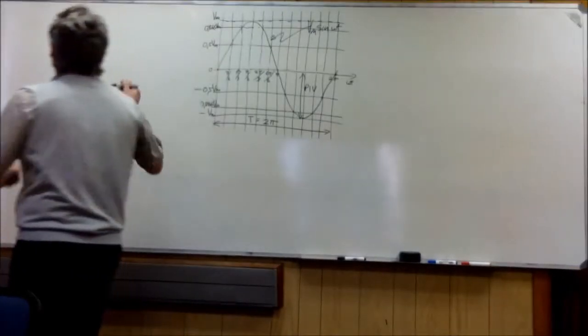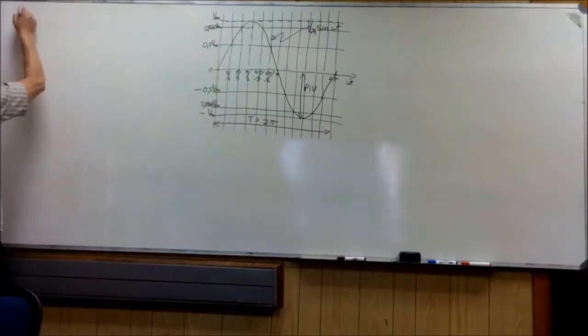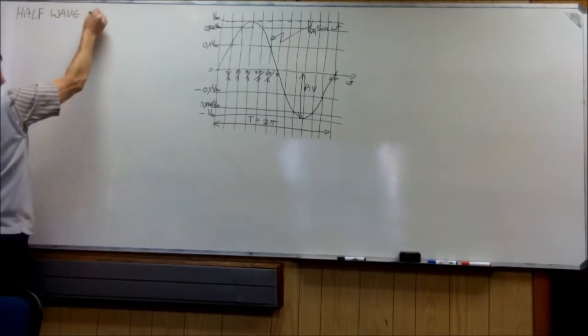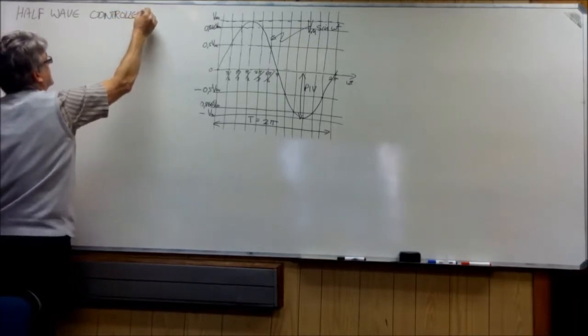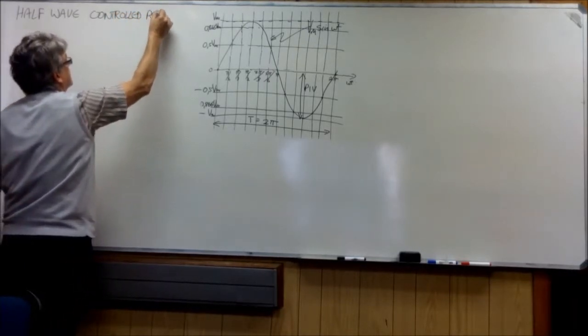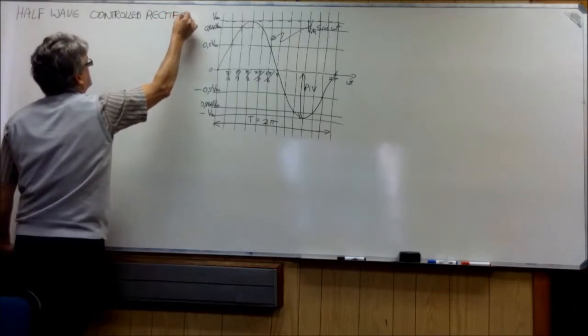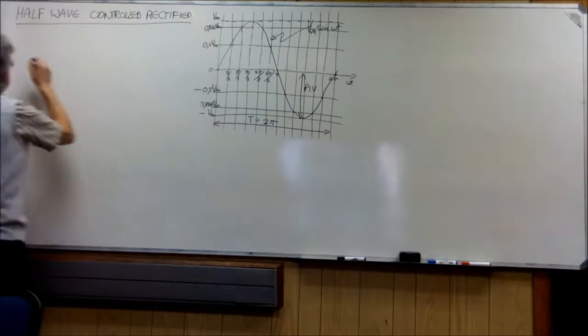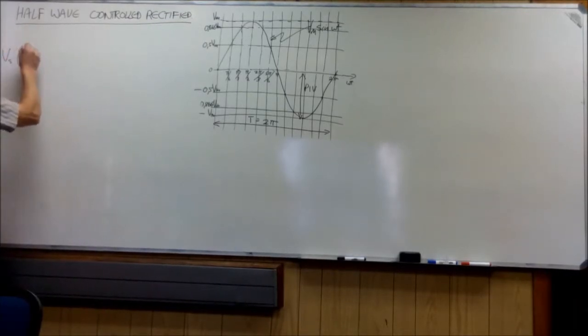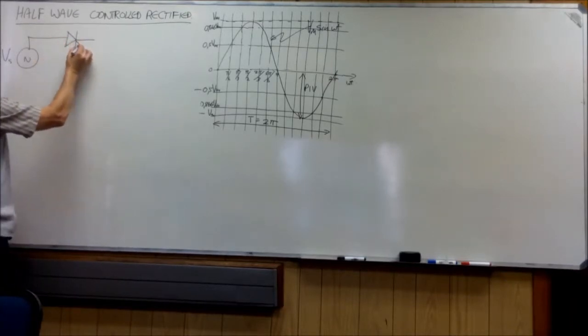The next circuit that we are going to look at is a half-wave controlled rectifier. The circuit, we have a supply VS and now we supply a device such as the thyristor that has got a control where we can control at which instant it is going to switch on.